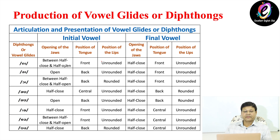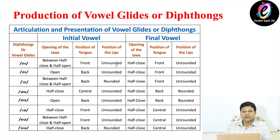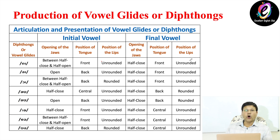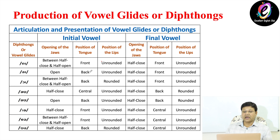Similarly for A-I: when we produce A, it is open, at the back part of the tongue, and unrounded. The second vowel I is half close, front, and rounded. For the diphthong O-I: O is between half close and half open, at the back part of the tongue, and the lips are rounded. The second vowel I is half close, front, and unrounded.